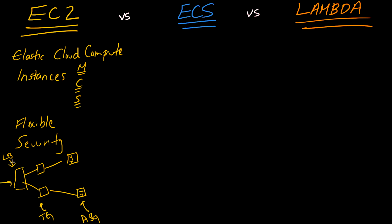In this setup, your requests hit the load balancer, which delegates work to certain target groups. Within those target groups are auto-scaling groups that spin up or spin down hosts depending on what capacity your system is running at. The EC2 instances are the ones actually fielding the traffic and returning the response to the caller. The key idea with EC2 is that you manage the particular instances, with all the pros and cons that come with that — the big pro being extreme flexibility.